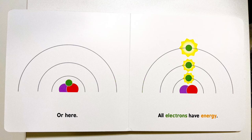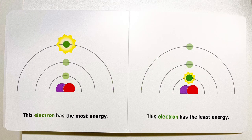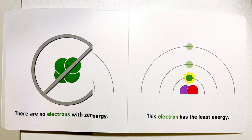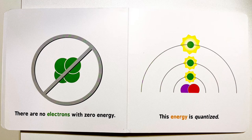All electrons have energy. This electron has the most energy. This electron has the least energy. There are no electrons with zero energy.